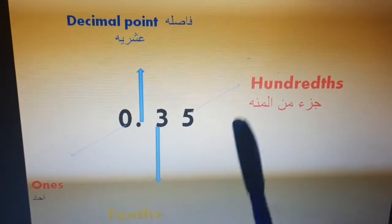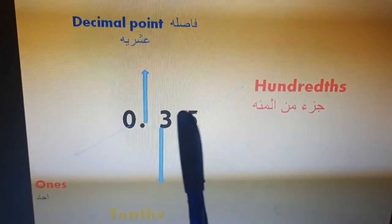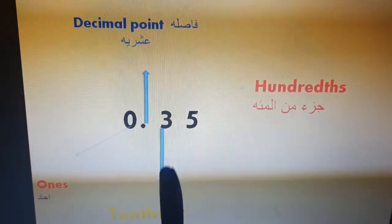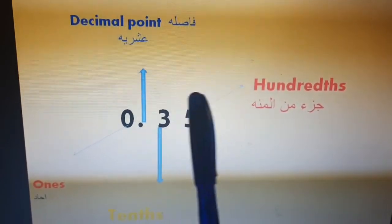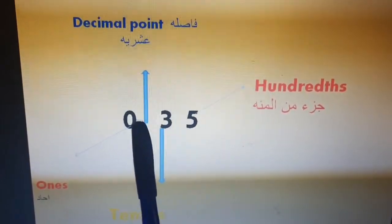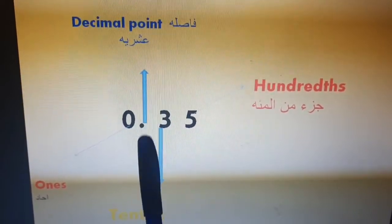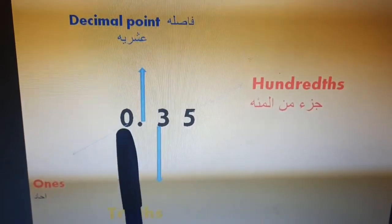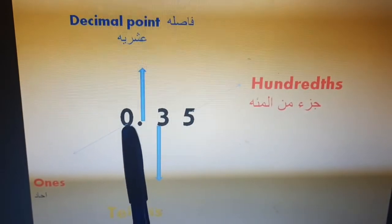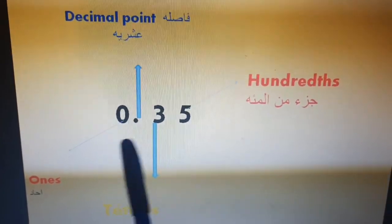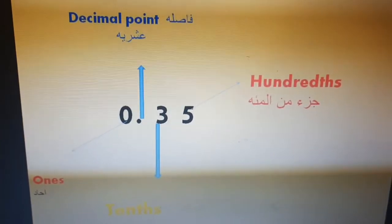How many colored parts are there? We have thirty-five colored parts. After decimal point, we write it beside the decimal point. Here, we have ones? No. So we will write zero here.